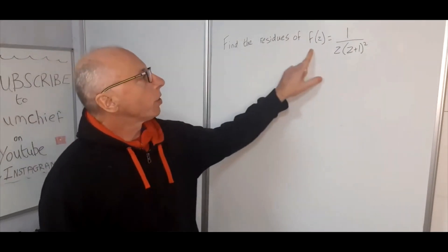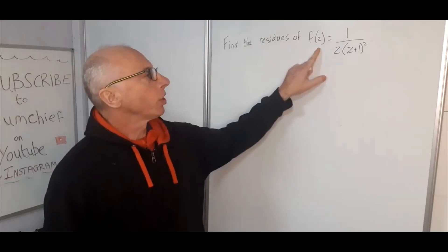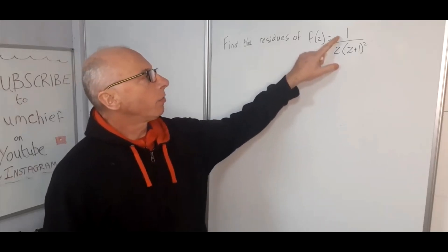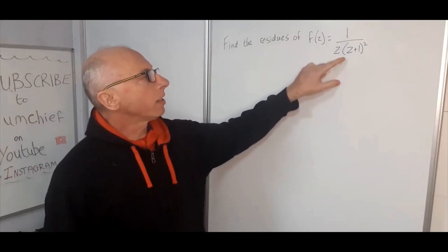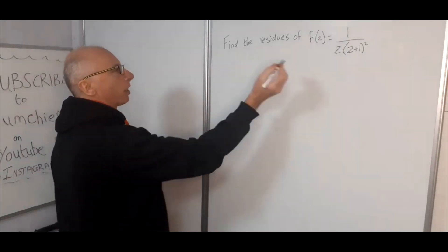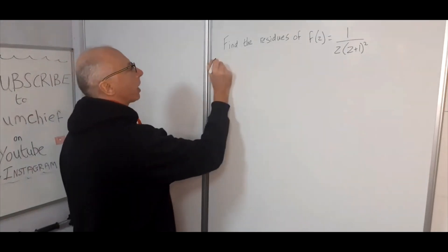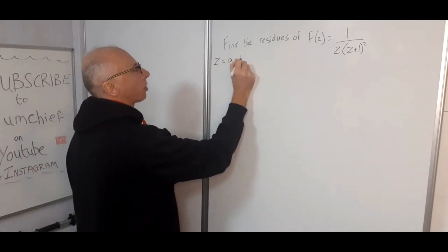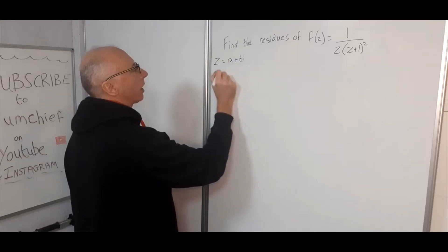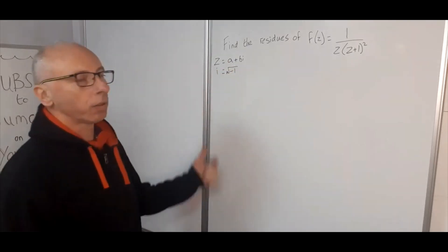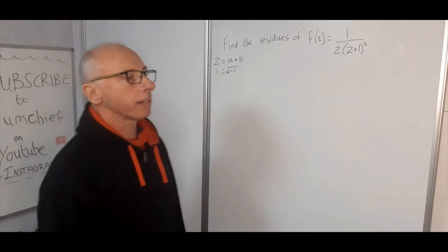In this video we are going to find the residues of a function f(z) = 1 over z times (z+1) squared, where z is a complex number a + bi, with i being the square root of minus 1. So this is complex analysis.